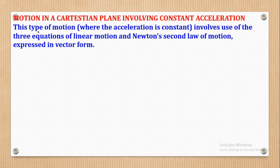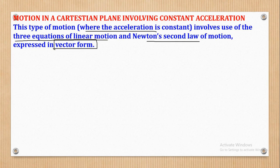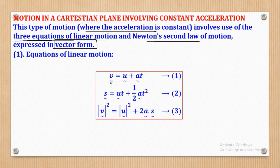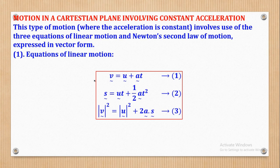The motion of this type, where acceleration is constant, involves use of the three equations of linear motion and also Newton's second law expressed in vector form. The equations of linear motion expressed in vector form: the first one will be V = U + AT. Velocity is a vector and acceleration is a vector, but time is a scalar. So on V, U, and A there is a tilde, but not on T.